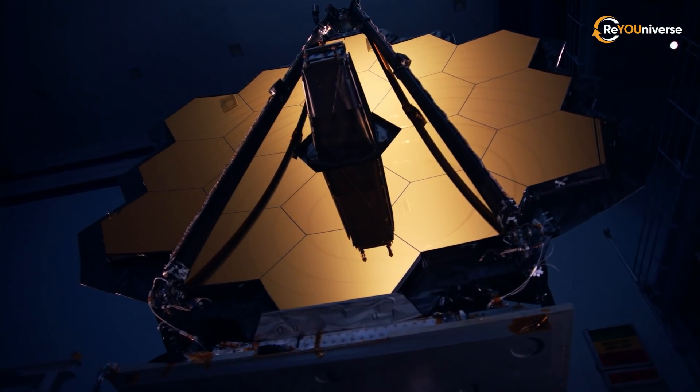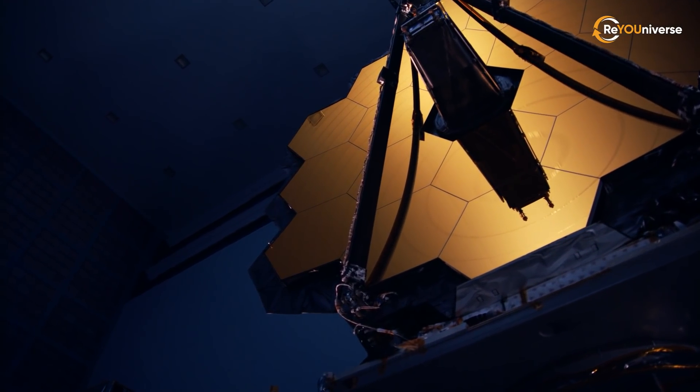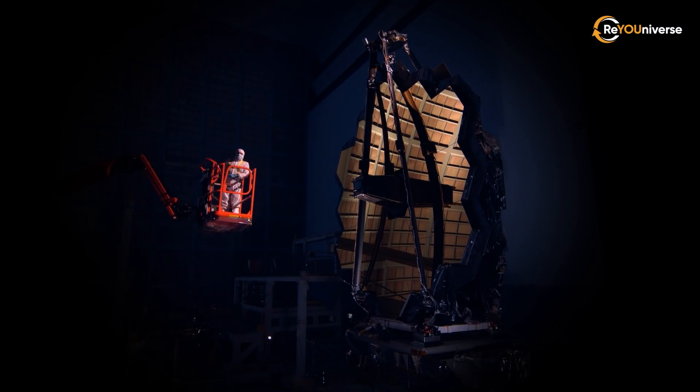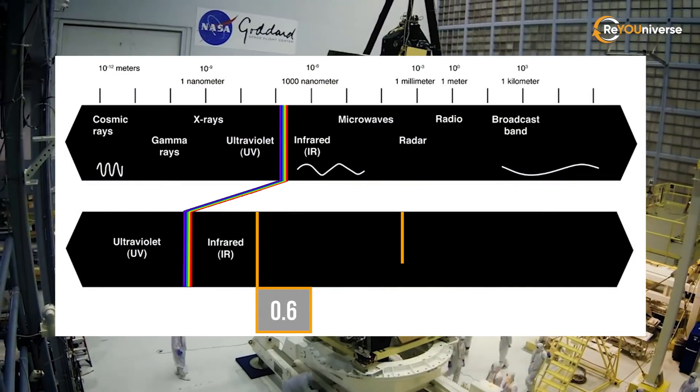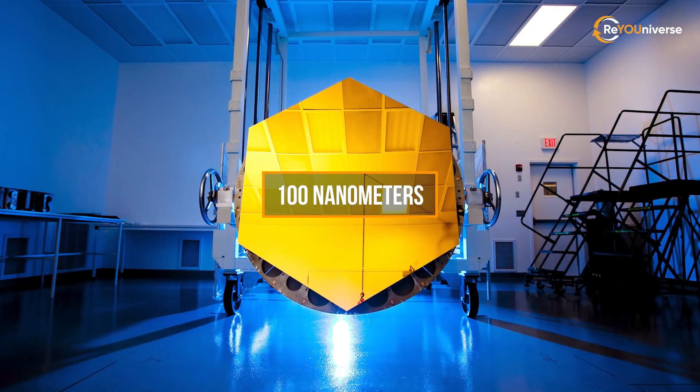The mirror consists of 18 hexagonal beryllium segments. This beautiful yellow color of each segment comes from nothing more than the purest gold. Gold plating ensures the best reflection of light in the infrared range. It will effectively reflect infrared radiation with a wavelength of 0.6 to 28.5 micrometers.